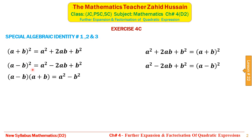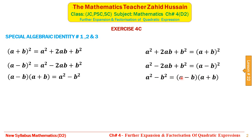The third identity is the product of two brackets where the first and second terms of the two brackets are the same: (a + b)(a − b) = a² − b². This can also be written in reverse. We will be given an expression with two terms, a negative sign between them, and both terms can be written as perfect squares. When each term is a perfect square, we factorize by writing the terms under the square root, subtracting and adding them.